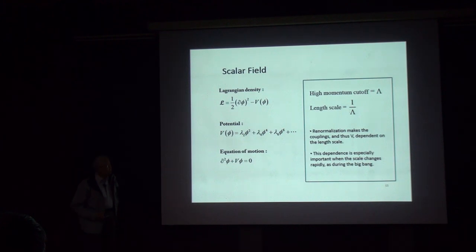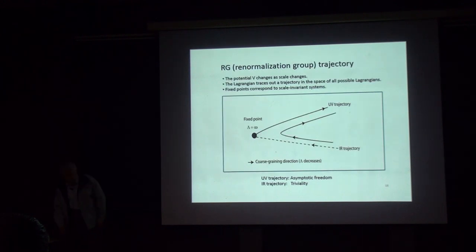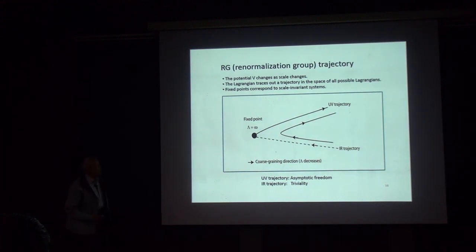This scale dependence of the potential is especially important when the scale changes rapidly, as in the Big Bang, where the whole point is that the scale explodes. Here is the renormalization group flow: the space of all possible Lagrangians, where as you change the scale the Lagrangian moves along a trajectory. There are fixed points representing scale-invariant systems, and trajectories either flow into or out of these fixed points.